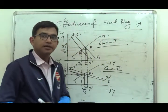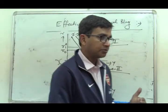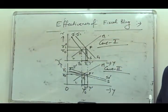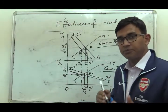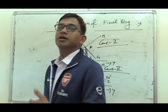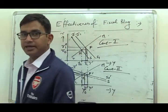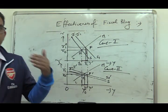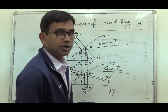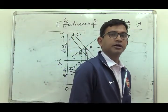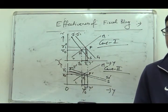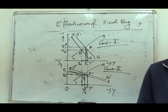To summarize: if the LM curve is steeper, fiscal policy will be less effective; if the LM curve is flatter, fiscal policy will be more effective. Correspondingly, if the IS curve is flatter, fiscal policy will be less effective; and if the IS curve is steeper, fiscal policy will be more effective. Thank you.